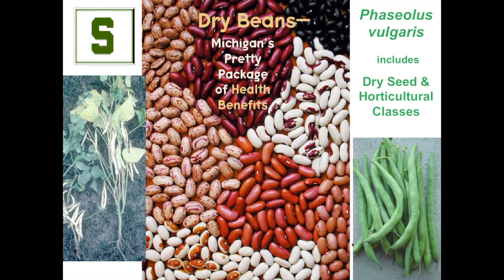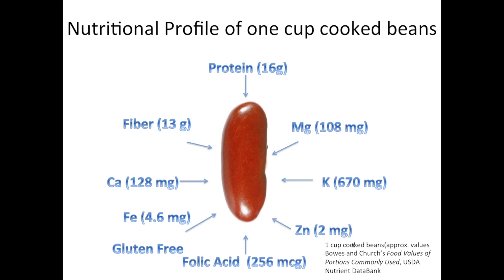Before I get into my topic, dry beans are a pretty package of health benefits. All beans need to be cooked before they can be consumed. Here I'm showing a nutritional profile of one cup of cooked beans. Beans are high in protein, which blends well with cereal proteins for a vegetarian diet. They're very high in fiber, both soluble and insoluble. They have high levels of nutrients including magnesium, potassium, and calcium, along with micronutrients iron and zinc. There are programs underway to enhance micronutrient content. They're also very high in folic acid and are a gluten-free product.